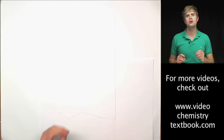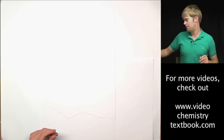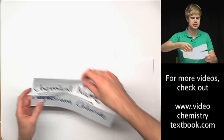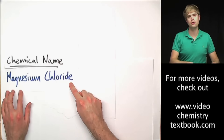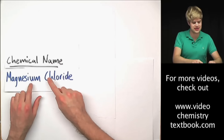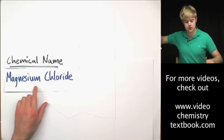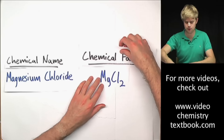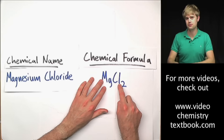Let's talk about how to write chemical formulas for ionic compounds. We're going to start with a chemical name like magnesium chloride and learn the steps to take this chemical name and use it to write a chemical formula like MgCl2.